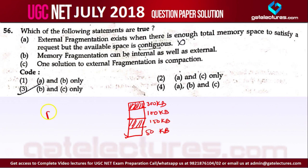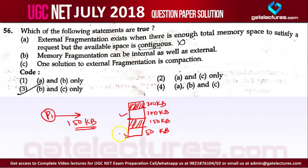Any process comes and this process demands 150 KB from this main memory. You know that 150 KB is available but it is not contiguous, so you cannot allocate this to process P1.